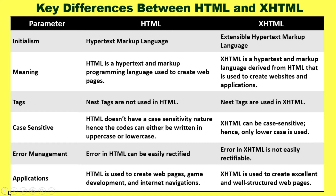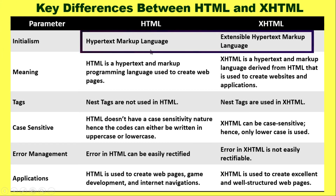From the exam point of view, you need to understand and write both. The first one is our parameter column, then we have HTML and XHTML as three columns, and comparisons will be done on the basis of these parameters. The very first difference says that HTML stands for Hypertext Markup Language, whereas XHTML stands for Extensible Hypertext Markup Language.